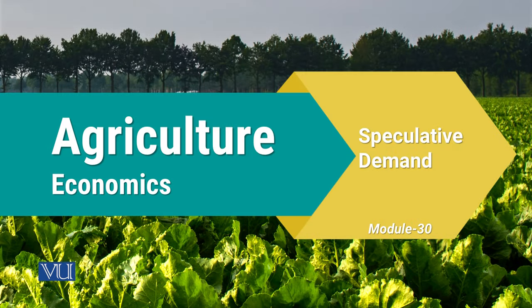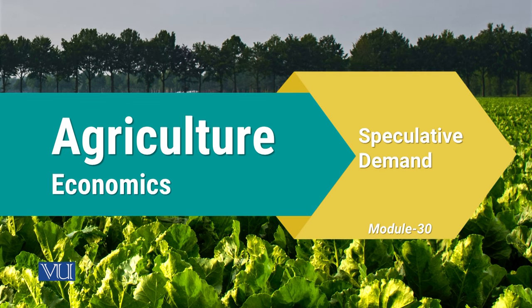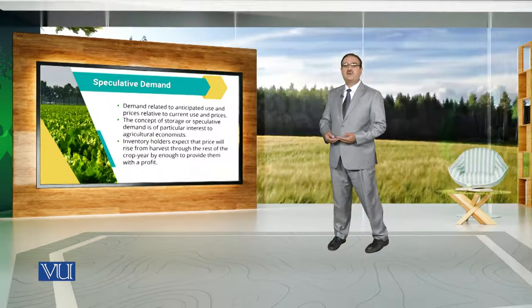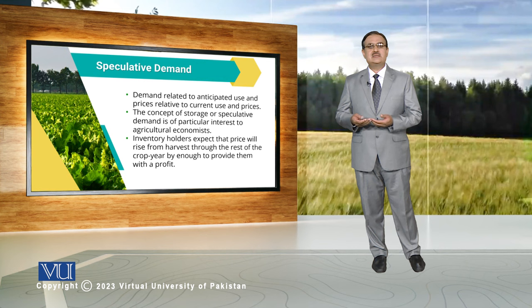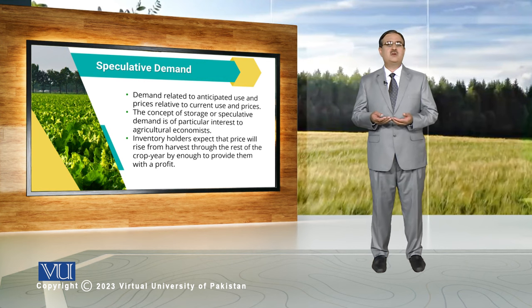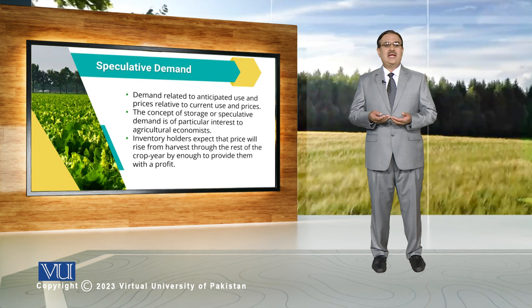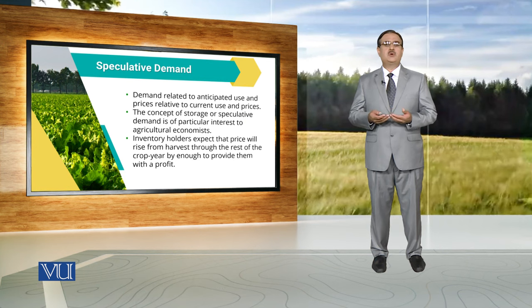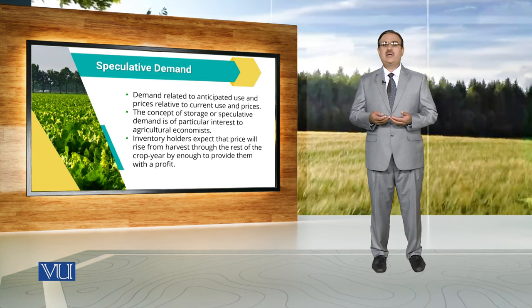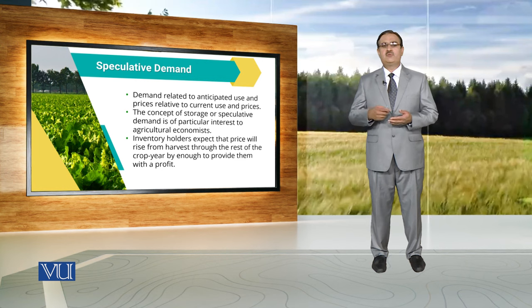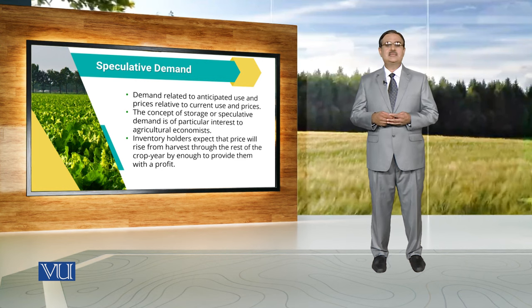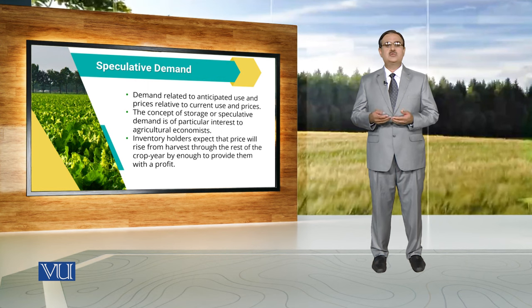Module 30: Speculative Demand. When we talk about demand, we usually talk about demand of a commodity for its current use. But in real life, there is demand for a commodity that relates to its anticipated use — its future use. Whenever we discuss the future use of a particular commodity, we have to compare prices in the current time period with prices in the future time period. When we talk about Speculative Demand, it is in fact demand for storage.